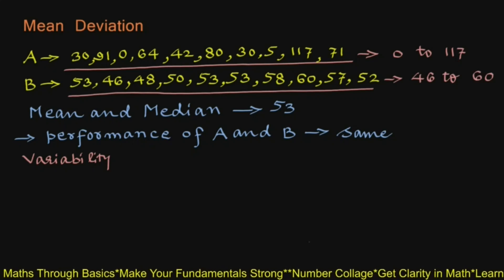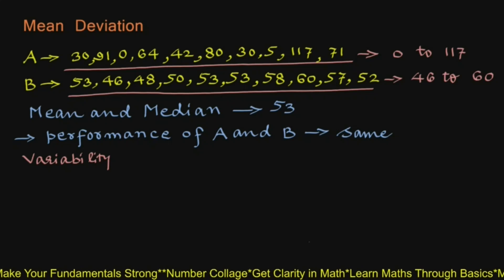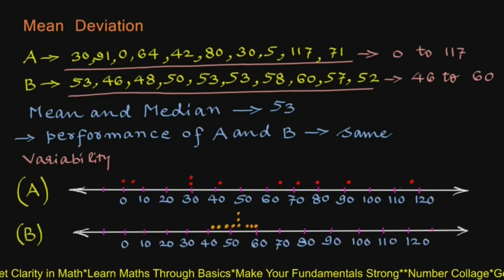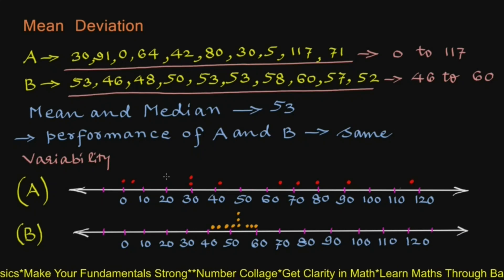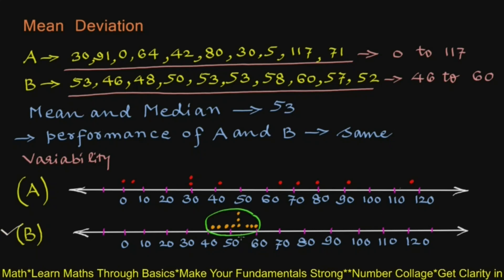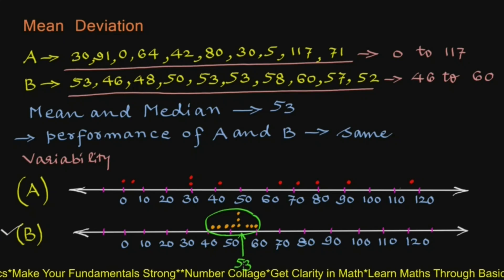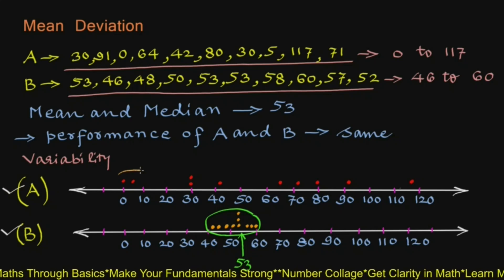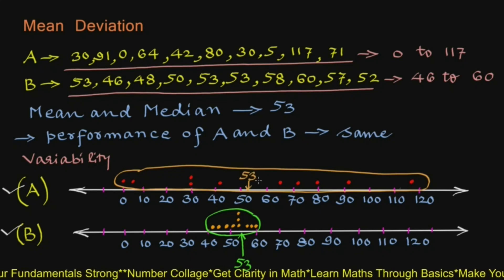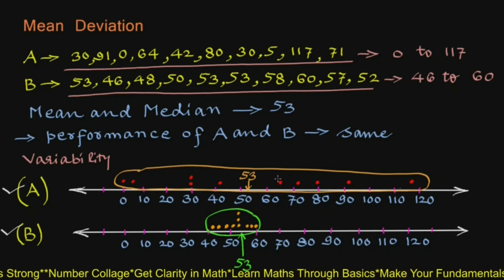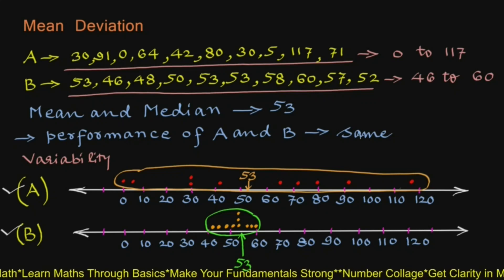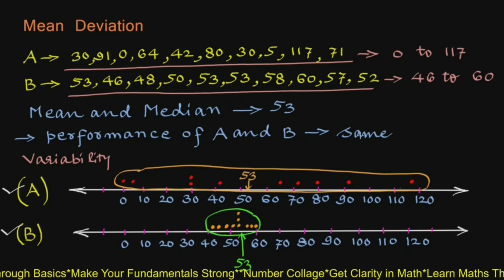If we plot these scores as dots on a number line, we can see that the dots corresponding to batsman B are close to each other and are crowded around the measure of central tendency — mean or median, which is 53 — while the dots corresponding to batsman A are scattered and more spread out from the mean or median value 53. This shows that measures of central tendency are not sufficient to give complete information about a given data; we also have to take into account the extent of the spreading out of the values from the mean or median.